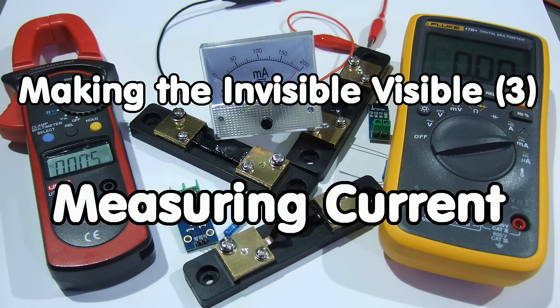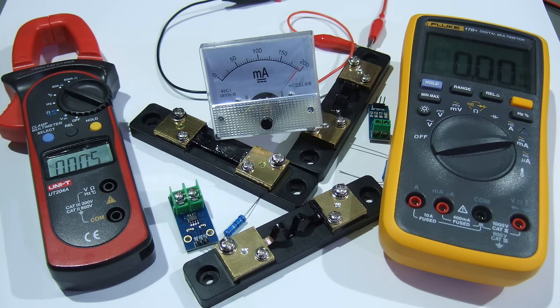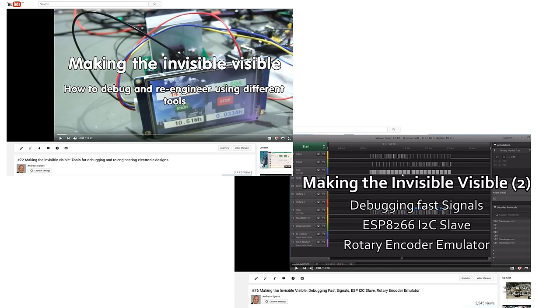Grüezi YouTubers. Here is the guy with the Swiss accent again. In videos number 72 and number 76, we started to make invisible electrons somehow visible. There, we dealt mainly with voltage. In this video, we continue with measuring current.